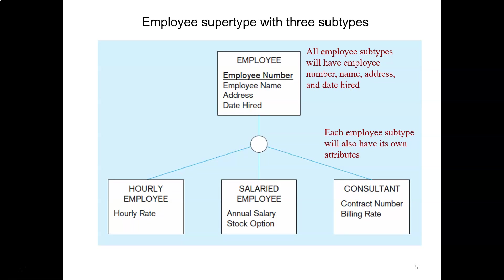Consider the employee entity as a supertype with three subtypes: hourly employee, salaried employee, and consultant. These subtypes exist because each has unique attributes — hourly employees have a unique attribute called hourly rate, which does not apply to salaried employees or consultants, and consultants have a billing rate and contract number unique to them. The supertype employee has common attributes: employee number, name, address, and date hired. The supertype holds all common attributes, while subtypes hold only their unique attributes.